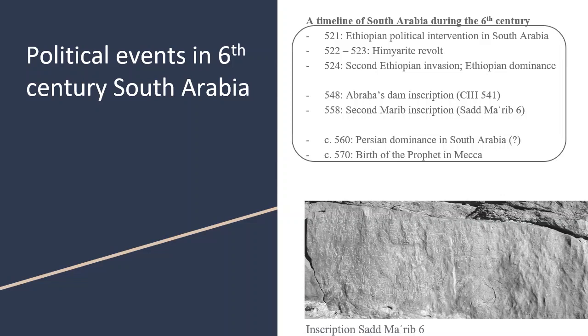Yusuf's revolt led to a second, more drastic Ethiopian intervention. The Ethiopian ruler Abraha opted to directly assert control over South Arabia, appropriating the style and acts of the Sabaeo-Himyaritic rulers before him, leaving inscriptions in the Sabaic language and calling himself king of Saba, Dhu Raidan, Hadramawt, and Yamnat, as the Himyarites had done before. In the year 548 CE, Abraha left an inscription at the Marib Dam mentioning, among other things, the construction of a church in Sana'a, the reception of ambassadors from Rome and Persia, as well as the dam's reparation. Ten years after Abraha's deeds, some South Arabian tribesmen loyal to the Ethiopians left another inscription referring to repairs made to the dam in Marib — as far as I am aware, this is the final dated South Arabian inscription, written in the year 558 CE.